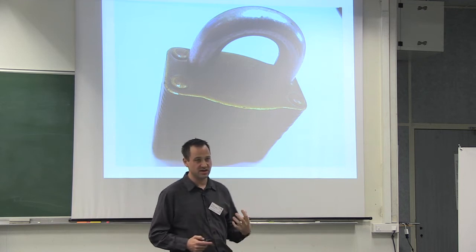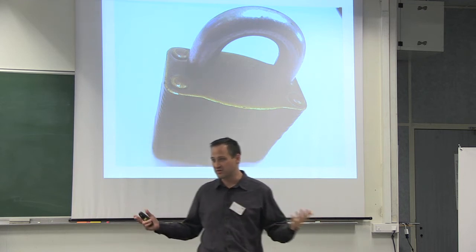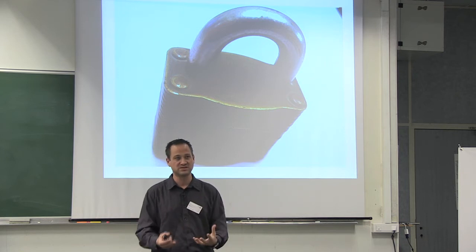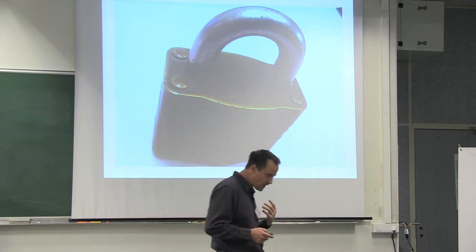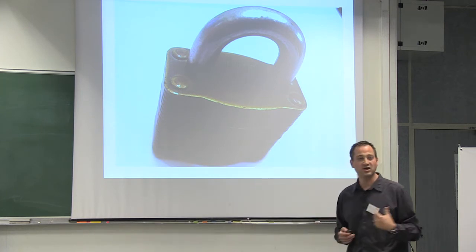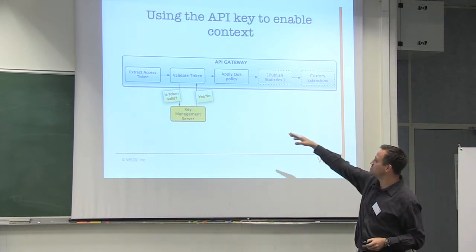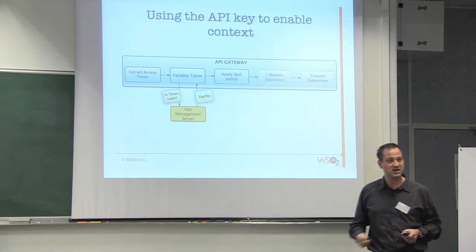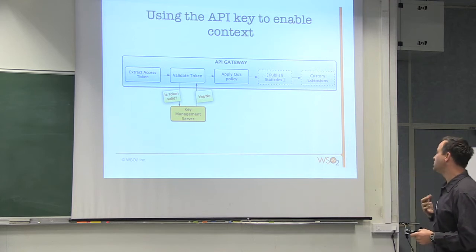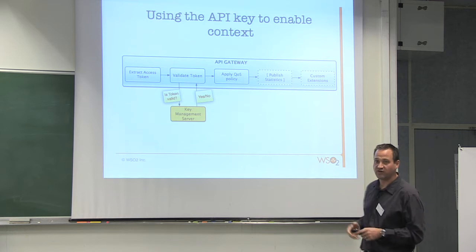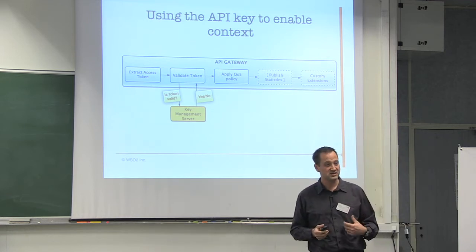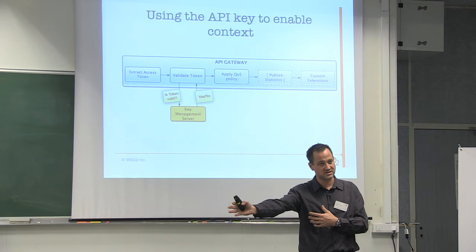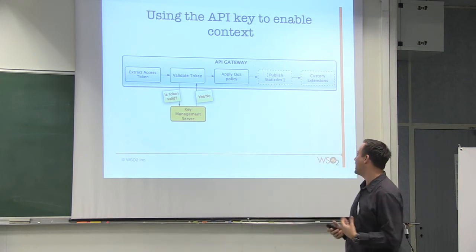Another obvious context is security. An API key informs the system of which app or client you are. From the API key, you can key off a lot of context: take the key, pass it to the key server, and simultaneously key off a throttling policy or usage policy. You can key off different behavior completely — for example, whether a call goes to a sandbox or to the real production system based on the key.